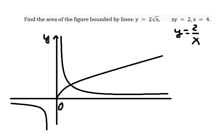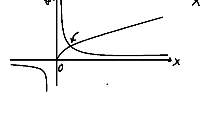Based on the figure, we can find the intersection between this one and this one. So we have 2 with the square root of x equals to 2 over x.